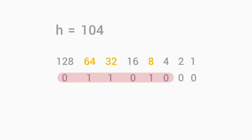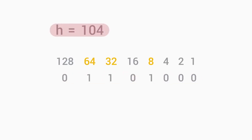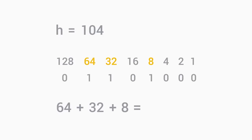Let's look at our ASCII to binary table again. The letter H in binary is 01101000. Now let's look at an ASCII to decimal table — the letter H in decimal is 104. Let's try our conversion chart: 64 plus 32 plus 8 equals 104. The math checks out.